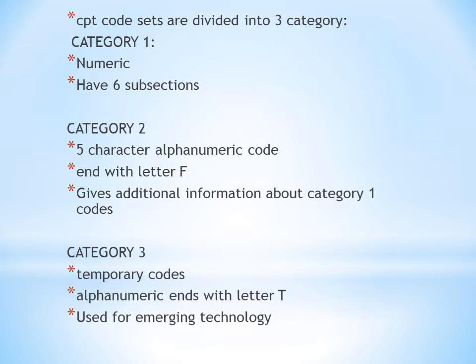Category III codes are temporary codes — not permanent. They are also alphanumeric, with four numbers and the fifth character being the letter T. They are used for emerging technologies.